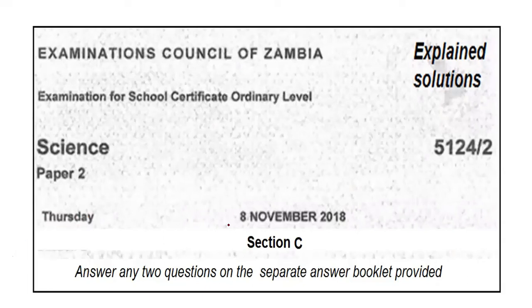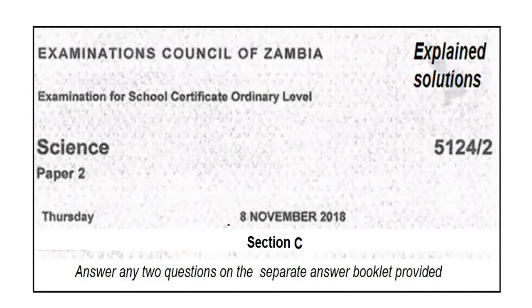Welcome to Eagle's Concept Learning Room. We continue with solutions for the 8 November 2018 Science Paper 2, which is Chemistry Section C. Section C has three questions, and you are only supposed to answer any two questions of your choice in a separate answer booklet. Since we are just teaching, I will go through all three questions to explain the concepts involved and help you prepare for your forthcoming exams.